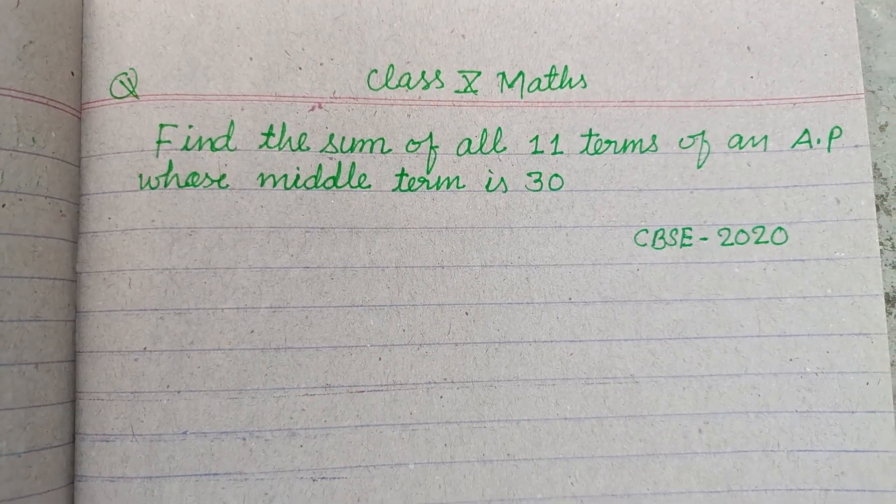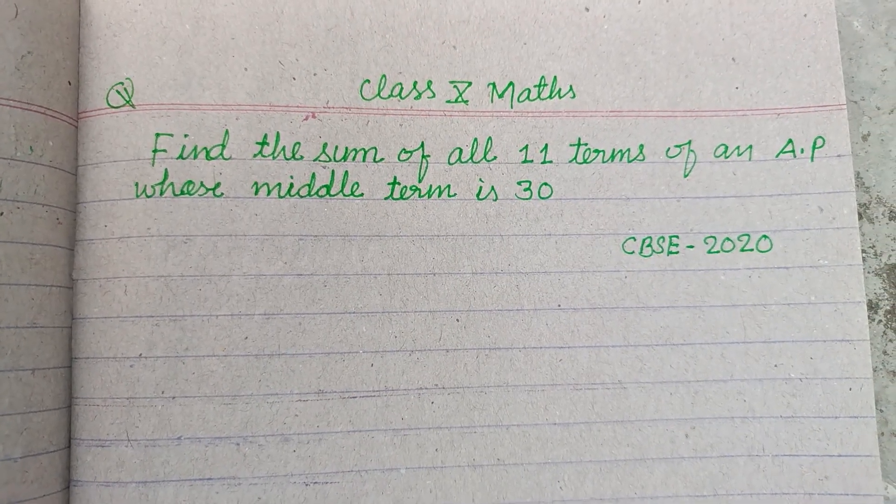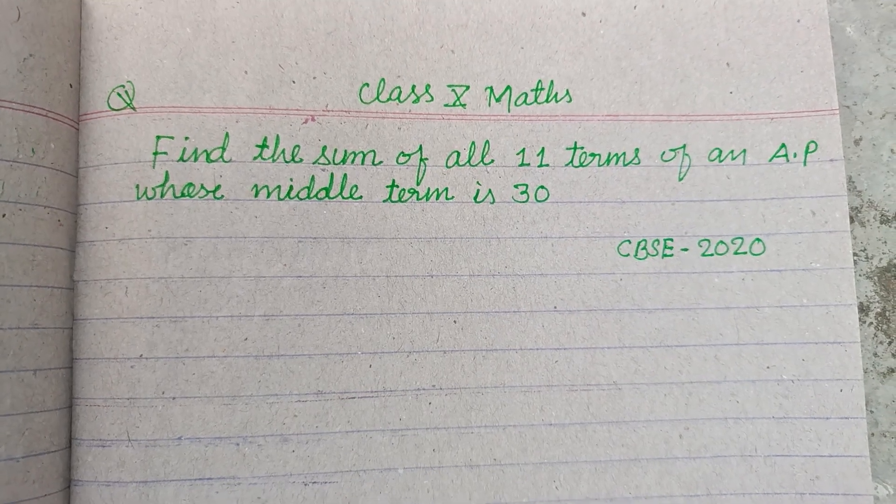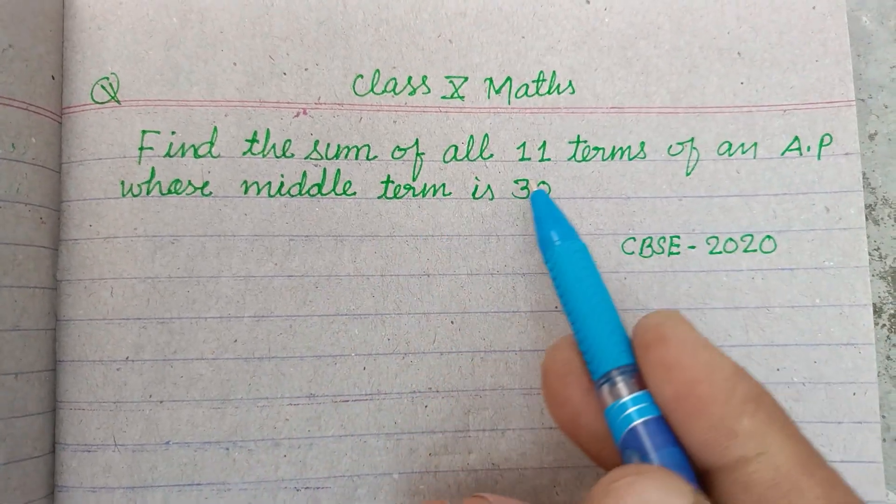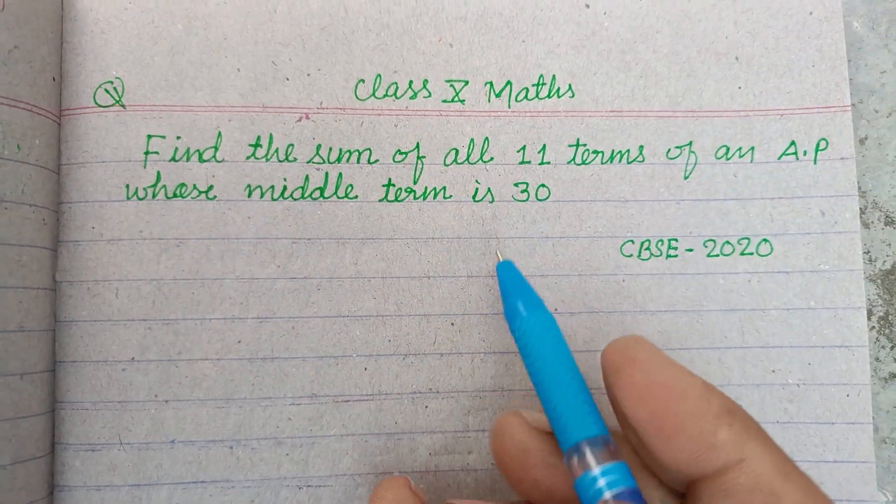Hello viewers, warm welcome to this YouTube channel. This is a question from CBSE Class 10 2020 board exam. Find the sum of all 11 terms of an AP whose middle term is 30.